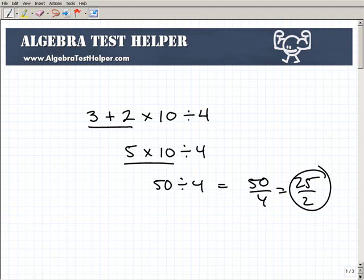Now did I make any mistakes here? No I didn't, right? 3 plus 2 is definitely 5, 5 times 10 is definitely 50, and 50 divided by 4 is definitely 25 halves. However, that's incorrect.